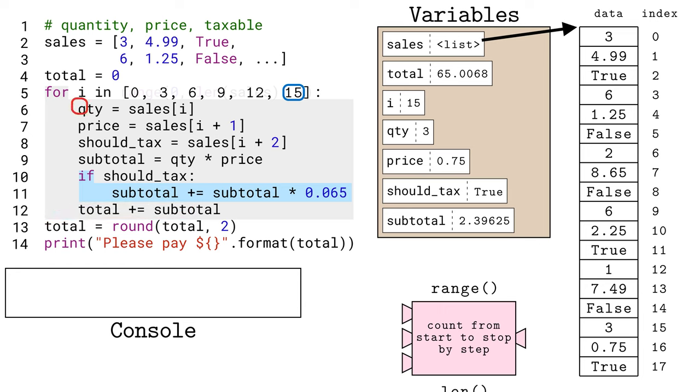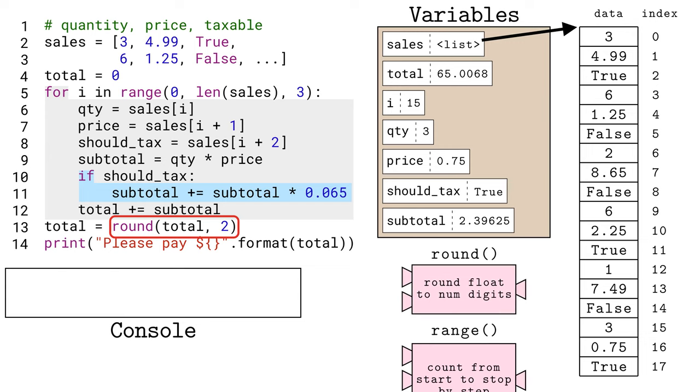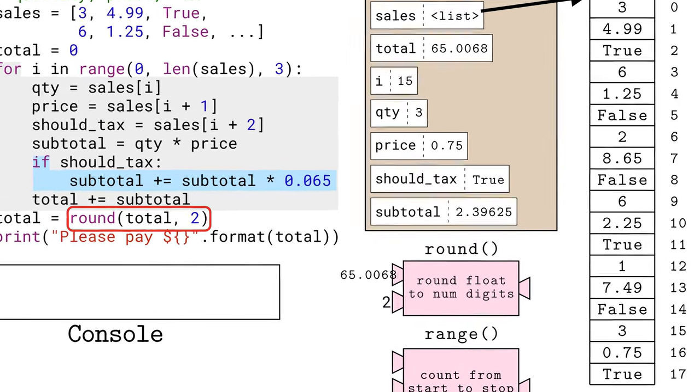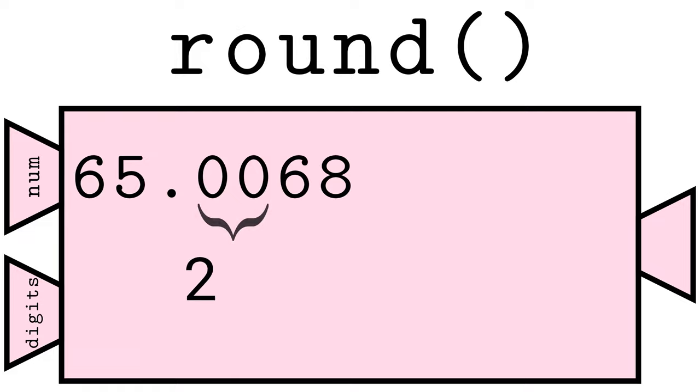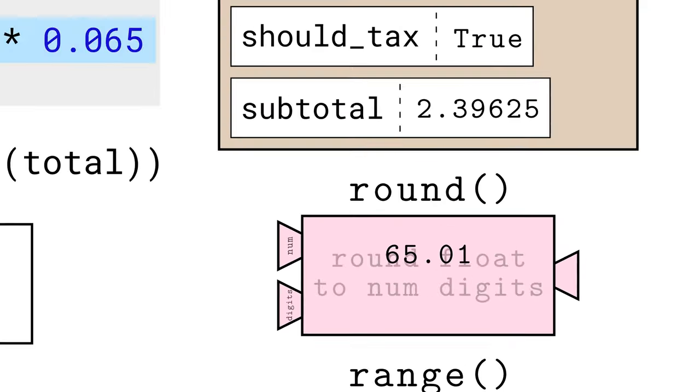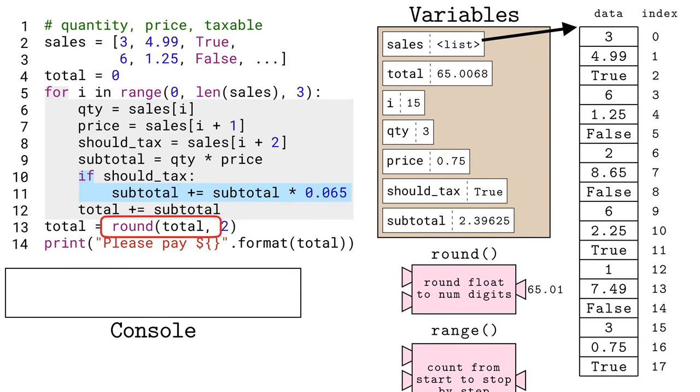The loop finishes after the sixth item in the transaction when Python gets to the end of the range. Before we display the results to the user, we want to round to two decimal places, since that is typical for American currency. Python's built-in round function has two inputs, the value to round and the number of decimal places. It will round the last digit up or down as appropriate, and return that rounded float, which we save back to the total variable.